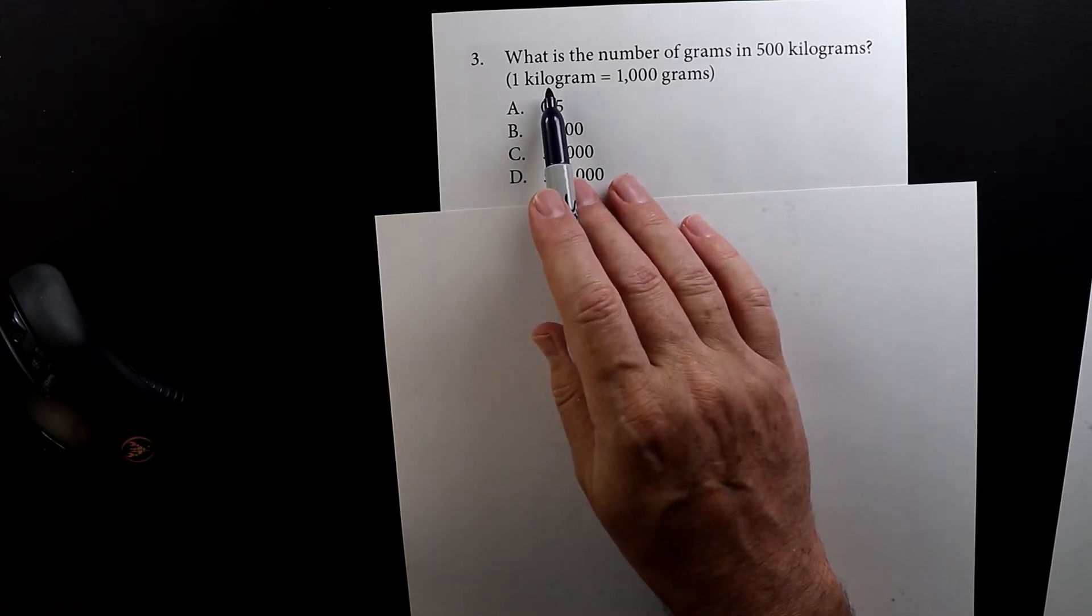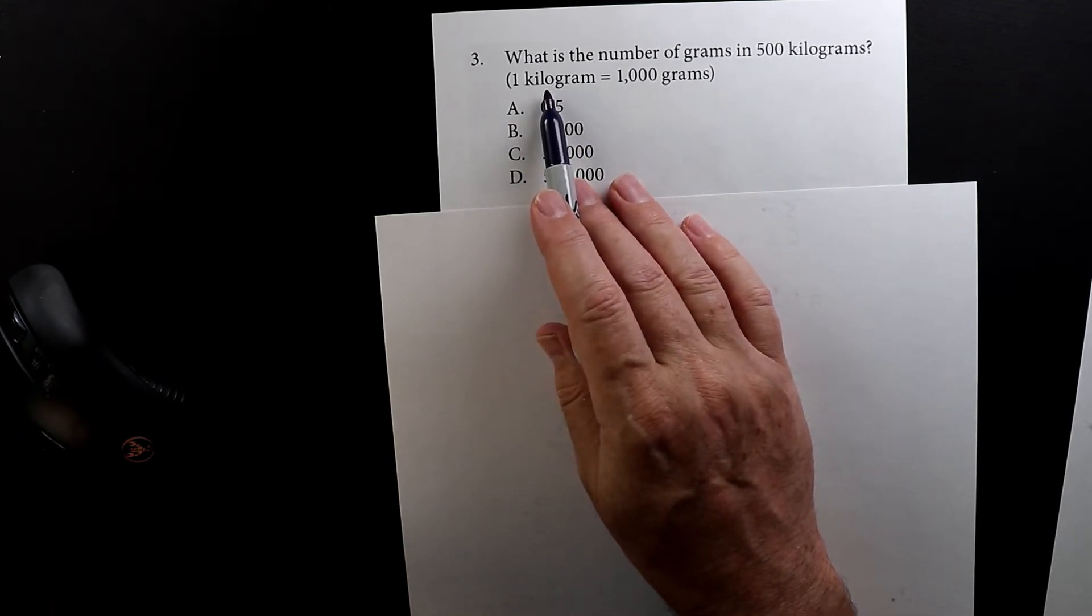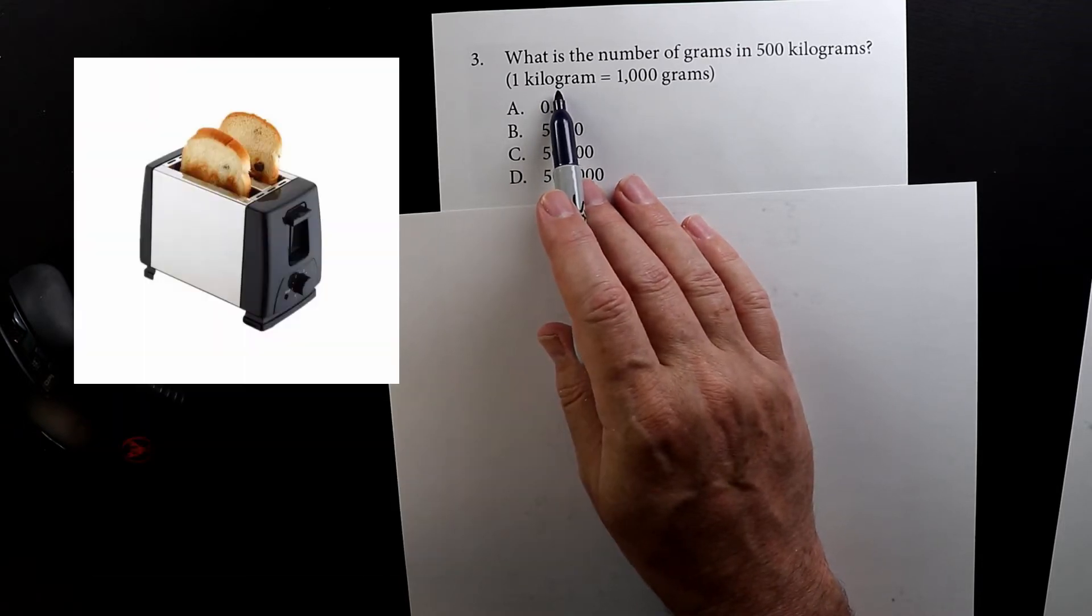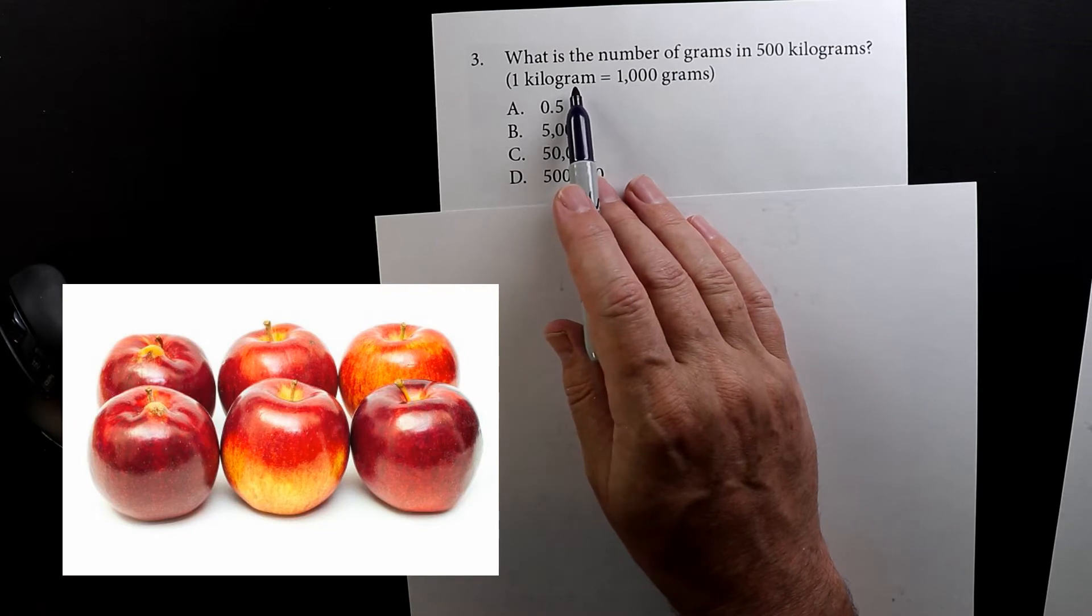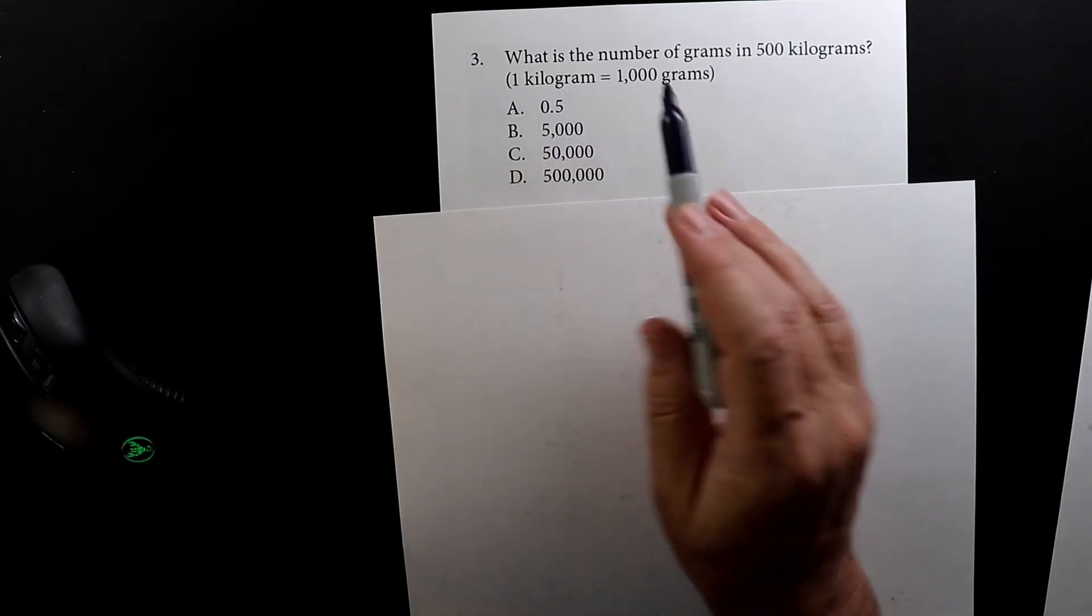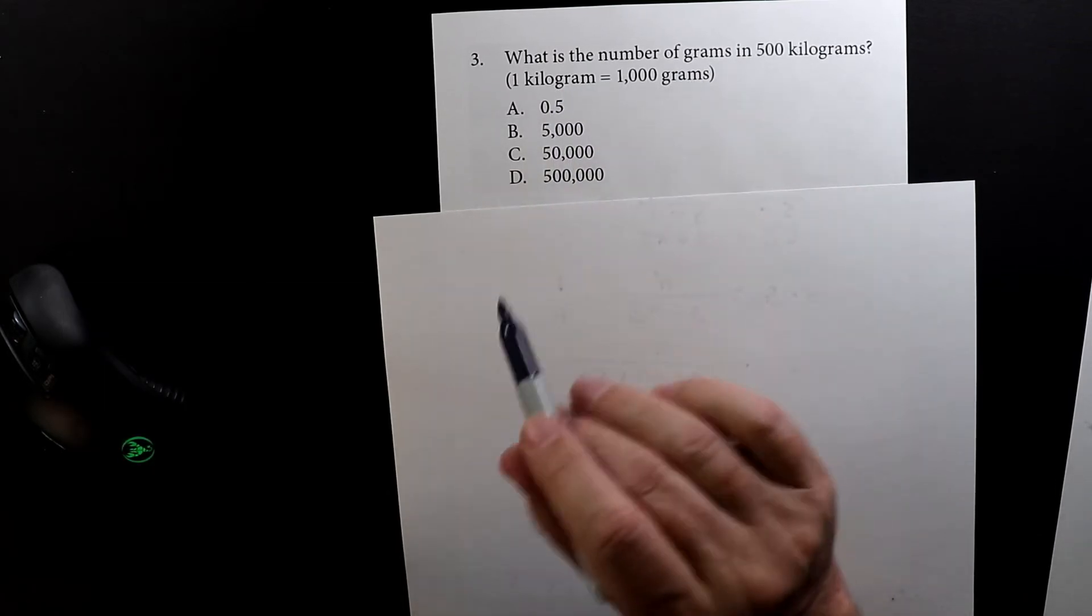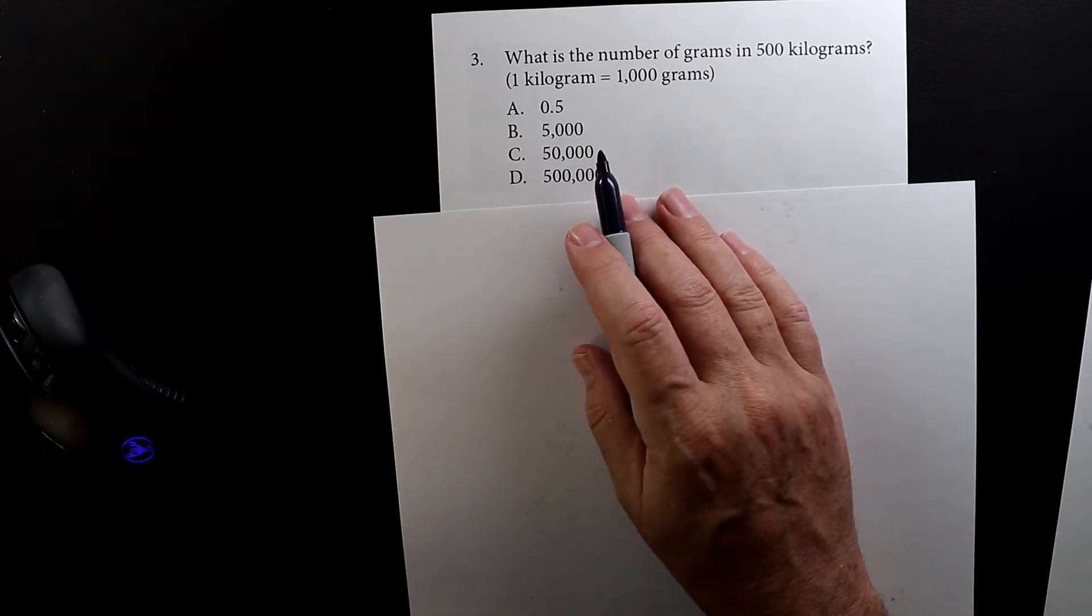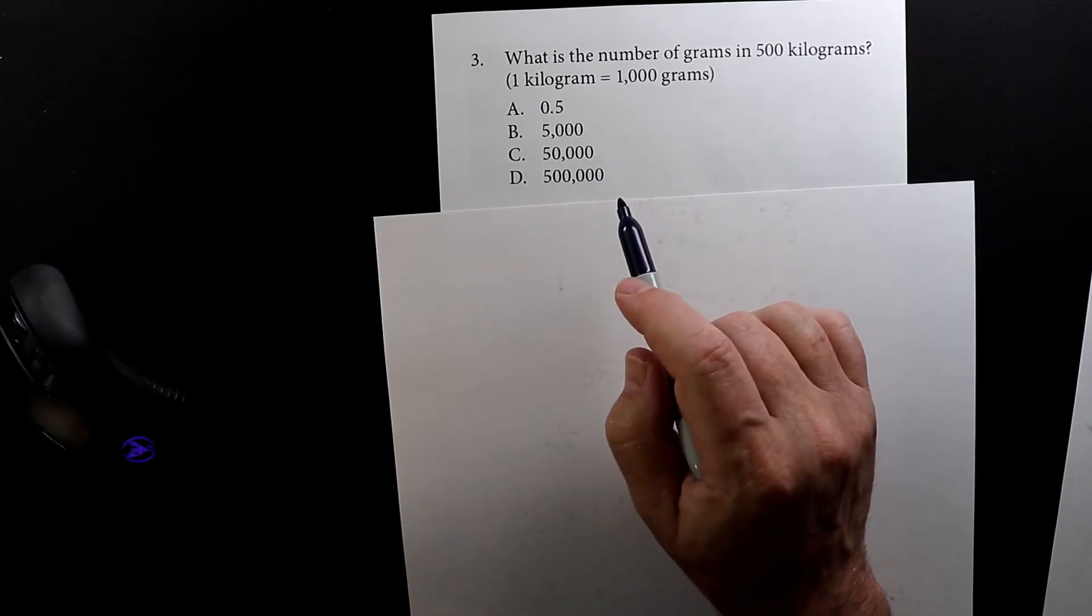A kilogram weighs about the same as a pair of shoes or a toaster. Six apples is about a kilogram. And then one gram is the size of a raisin, the weight of a dollar bill—that weighs one gram.